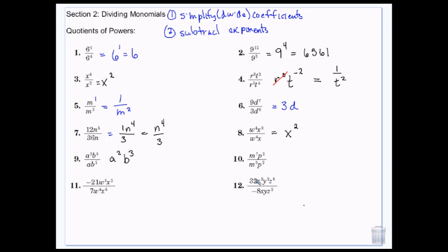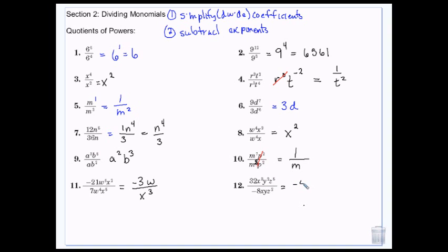8 is bigger than 7, so it wins the tug of war and the 1 that's left will be on the bottom. And then 2 and 2 cancel each other so we put a 1 up top. Negative 21 divided by 7 is negative 3. 5 over 4 — 5 minus 4 is 1. 2 over 5 — 5 minus 2 is 3, but because the 5 is bigger and it's downstairs, the 3 stays downstairs. 32 divided by negative 8 is negative 4. 3 minus 1 is 2. 2 minus 1 is 1. 5 minus 2 is 3.